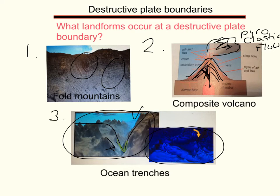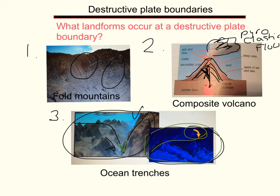This image gives you a different viewpoint, and you can see the arrow pointing to the trench — the line that marks where one plate goes underneath the other. So those are your three types of landforms: fold mountains, composite volcano, and oceanic trenches.